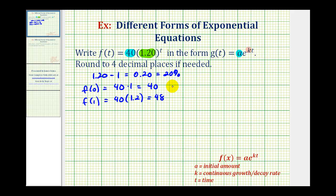So the two points we're going to use to determine g(t) are (0, 40) and (1, 48). Now we already said that a is the initial value, which is the function value when t = 0. So we already know a = 40.